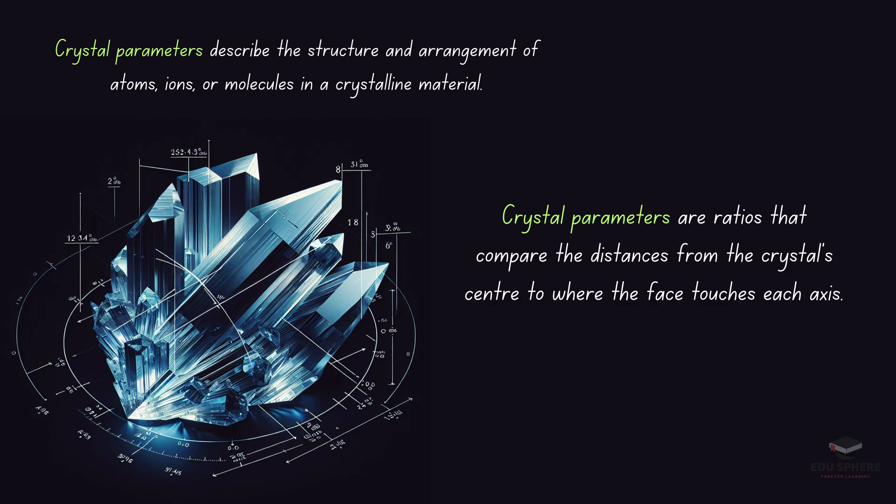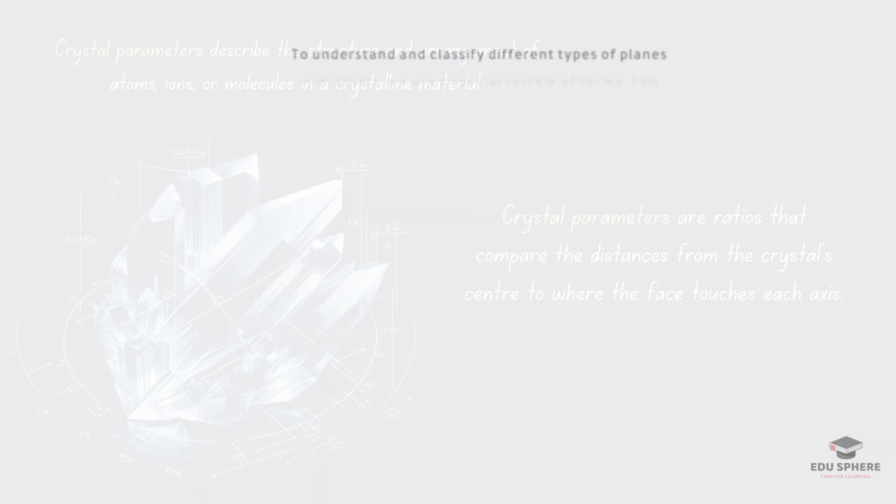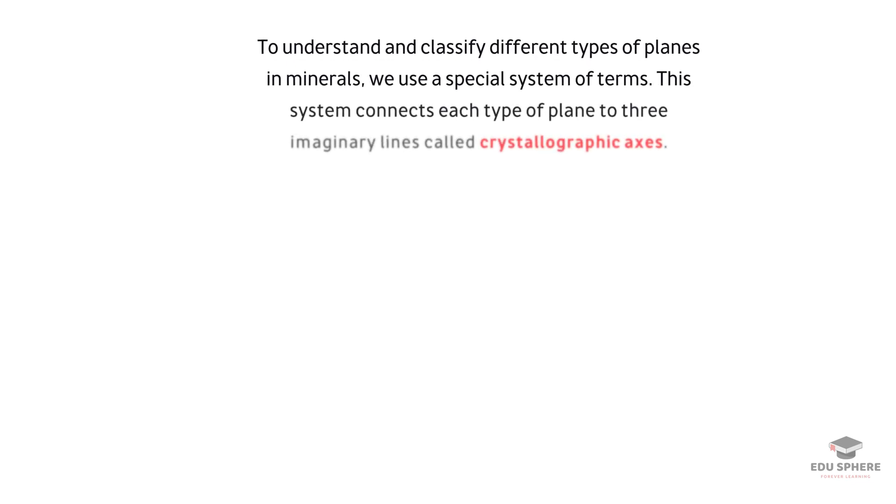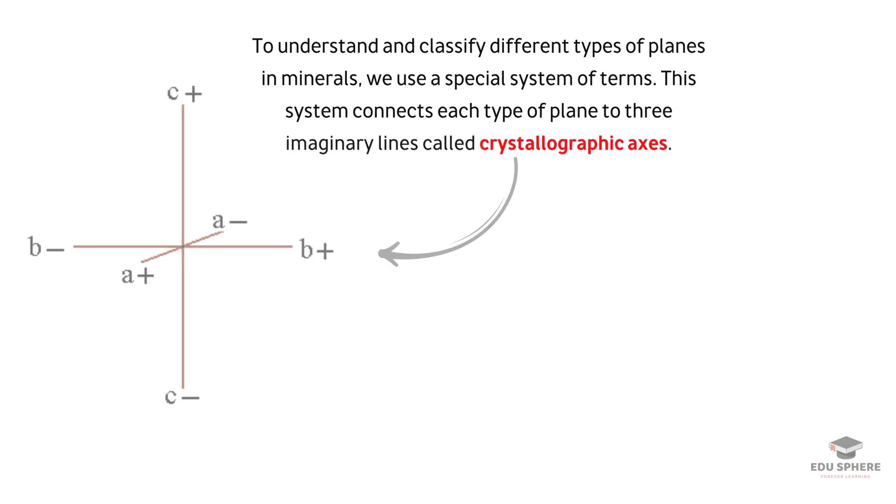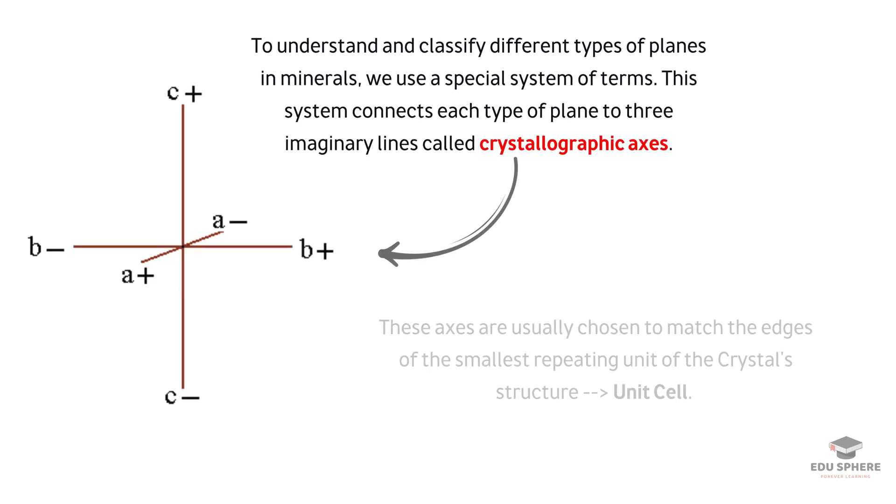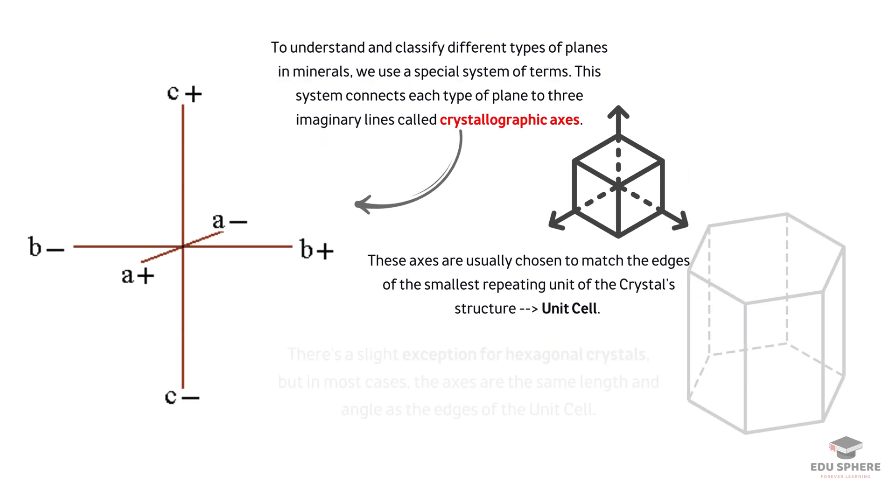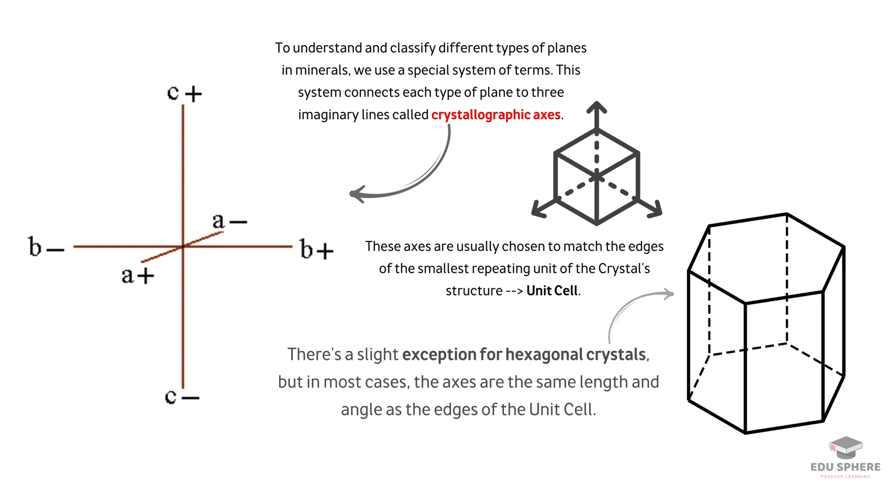The classification of crystallographic planes utilizes a nomenclature system that references three imaginary lines known as crystallographic axes. These axes are typically chosen to coincide with the edges of the unit cell, which is the smallest repeating unit in the crystal lattice. While hexagonal crystals present a unique case, the axes in most crystal systems exhibit equal lengths and angles, reflecting the symmetry of the unit cell.